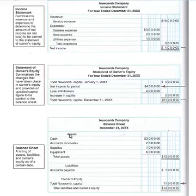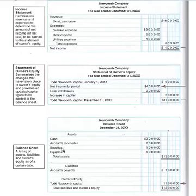The balance sheet represents the elements of the accounting equation: assets must equal liabilities plus owner's equity. The first heading is assets, and you list your assets underneath — in this case cash, accounts receivable, supplies, and equipment. These totals are listed in the left-hand column, with total assets listed in the right-hand column.